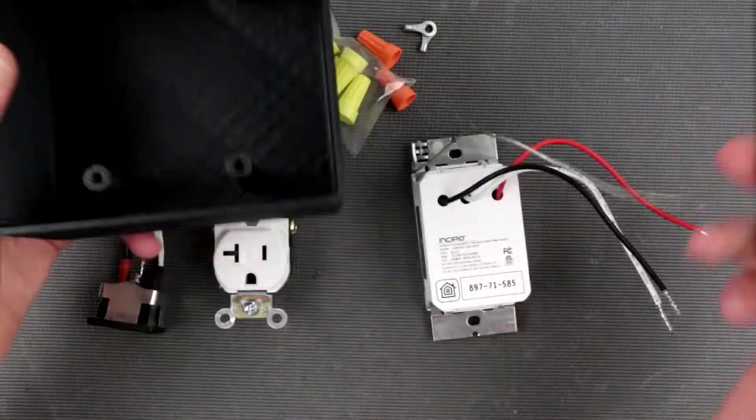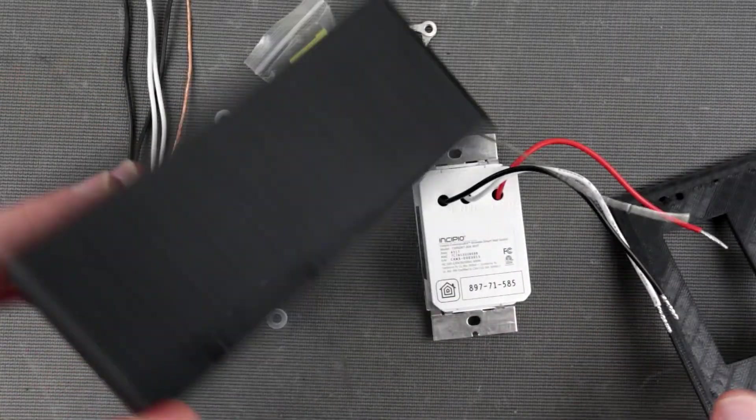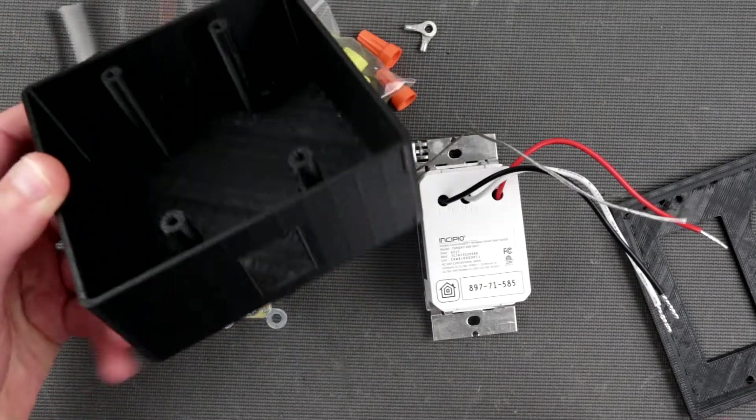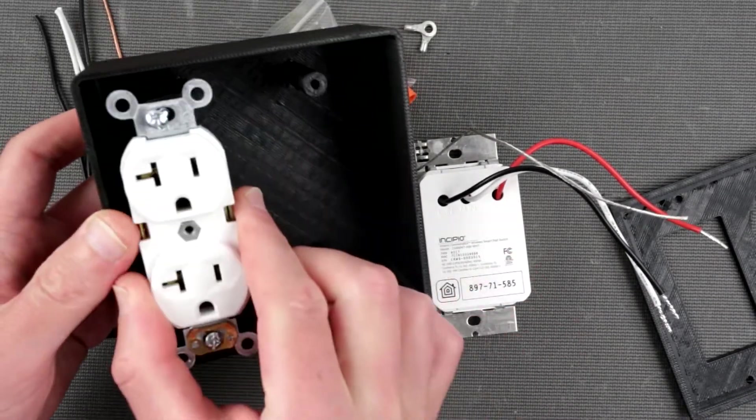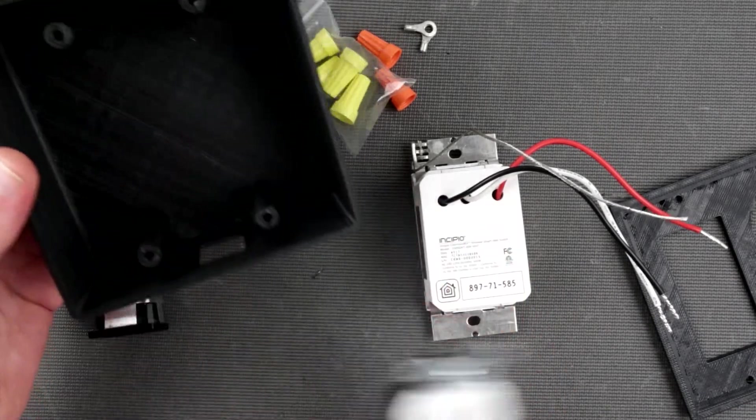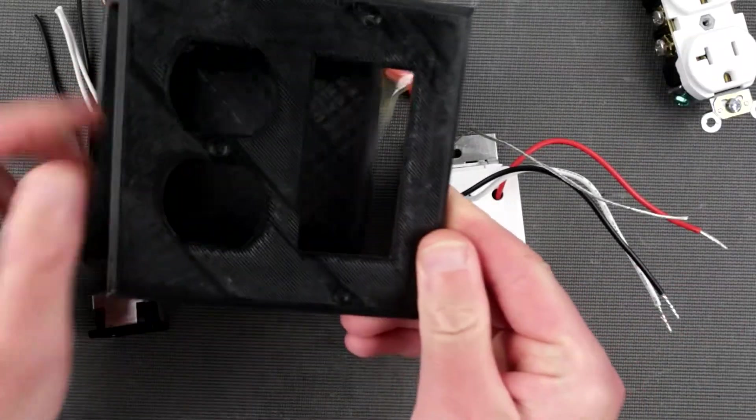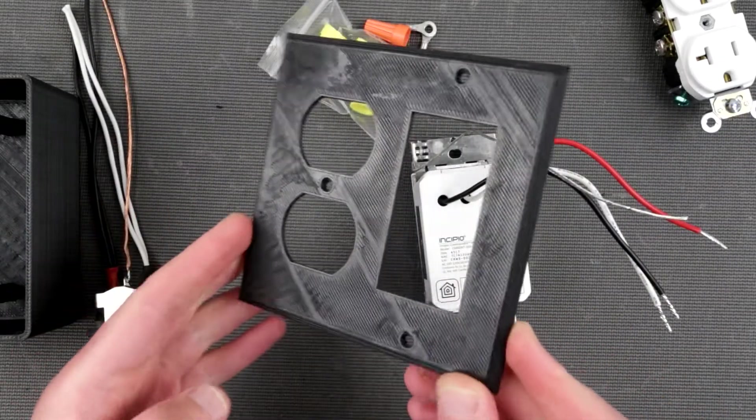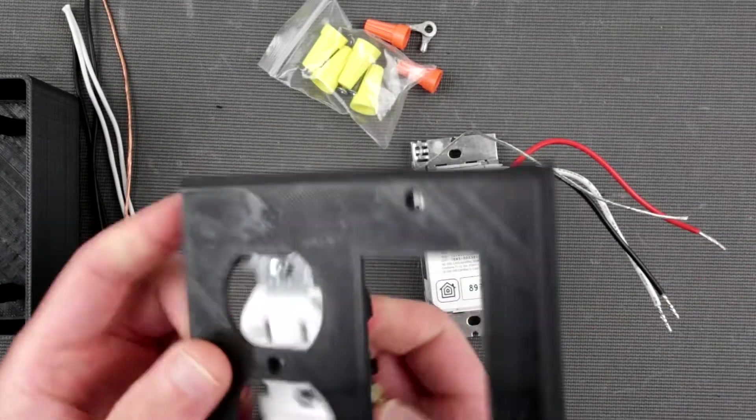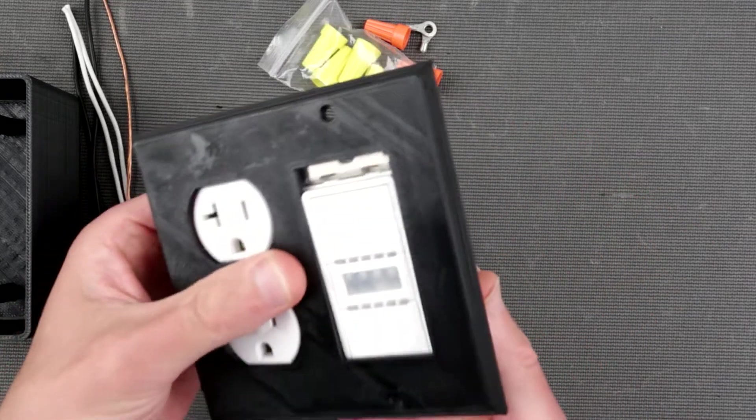Obviously you have to have a case, so I 3D printed and designed this case. It has two positions, one for outlet and one for dimmer, right here. I also made this black faceplate.